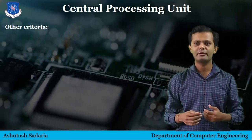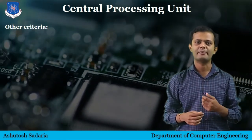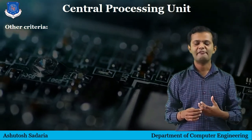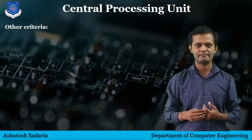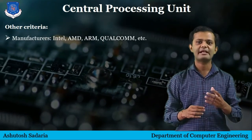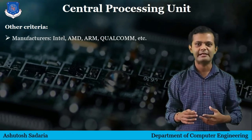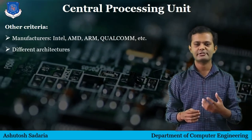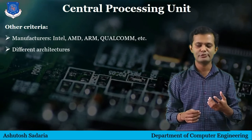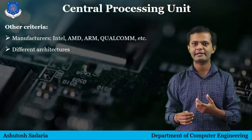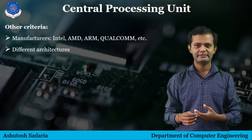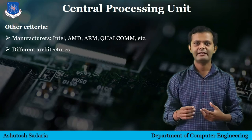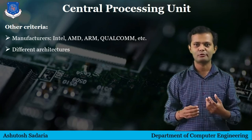Now we've seen the basic performance criteria of your processor. There are several manufacturers of processors like Intel, AMD, ARM, Qualcomm, and Mediatek. Each company uses different architectures — Intel uses its own architecture, AMD uses its own architecture with the latest being the Zen architecture with processor model name Ryzen, and Qualcomm uses ARM architecture to build their processors. There are two types of processors: 32-bit and 64-bit.